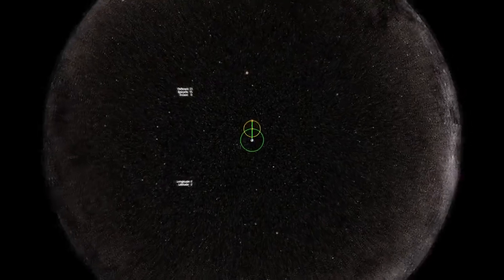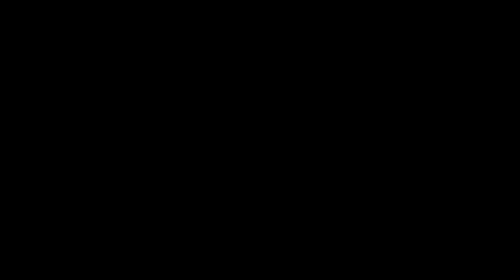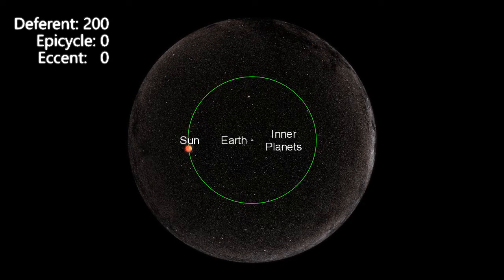However, this setup is only able to sufficiently predict the positions of the Sun, but fails to coincide with the positions of the remaining planets, which are deemed inner planets if their circles of motion are between the Earth and the Sun, and outer planets if their circles of motion are beyond the path of the Sun.